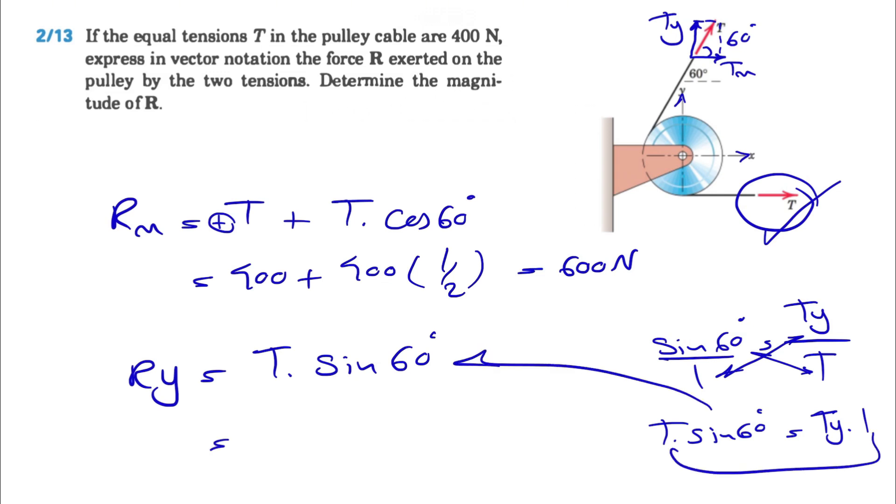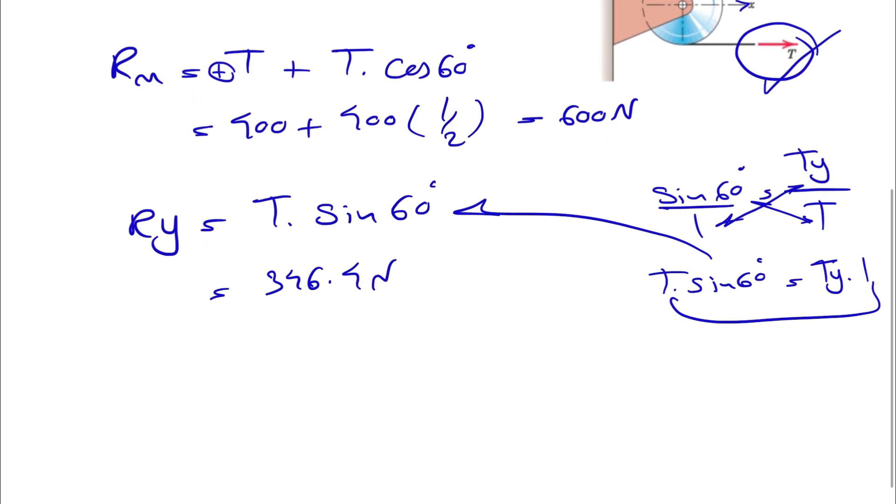And if we calculate Ry, what we get is 346.4 N, so if we want to write down our R in a vector notation, we will have 600 I plus 346.4 J, and the unit will be Newton for both of them, and that was the first part of the question, where we needed to find the R in vector notation.